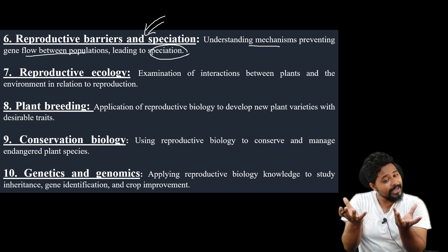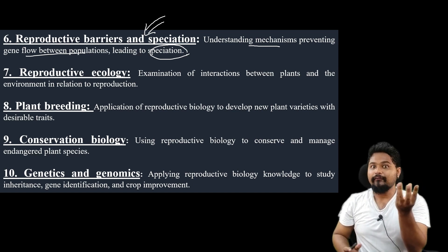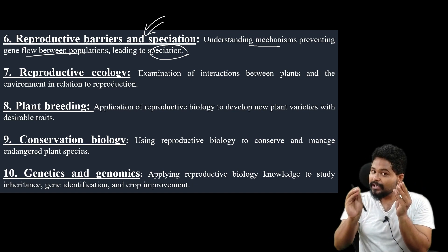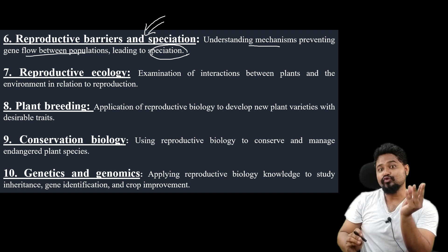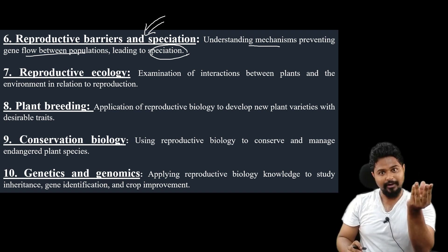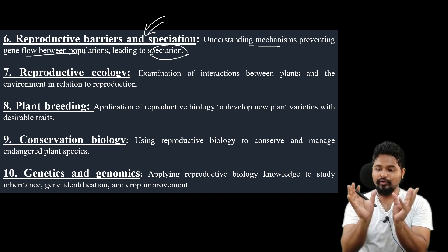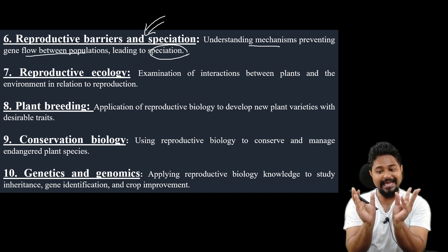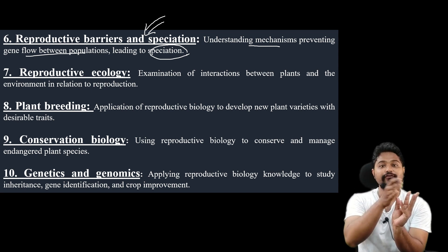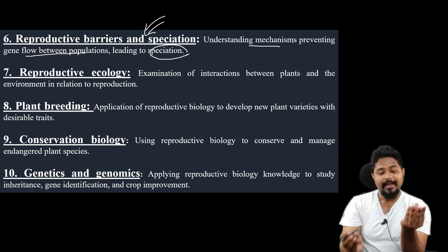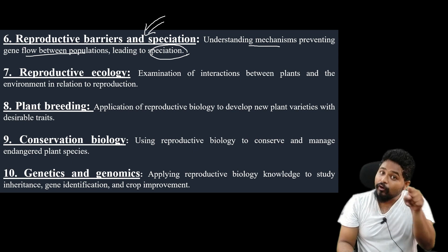If you don't have gene flow, then you can create a new species. If the flower changes, it will change the species. So you can create a new species, and due to evolution, that new species can evolve.